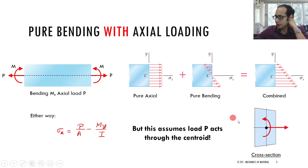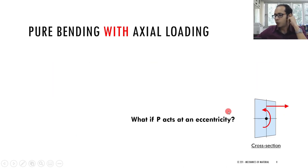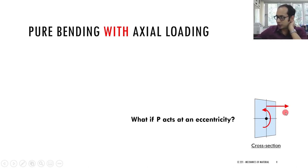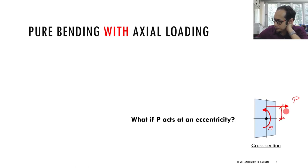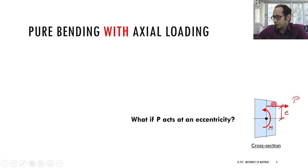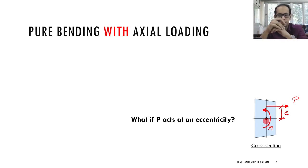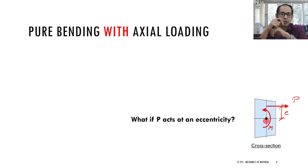That was the case where P acts exactly at the centroid. Now what happens if it acts at an eccentricity? In that case you have the moment M and you have the load P acting at a certain eccentricity e. What you do is shift the point of action of load P from its eccentric position to the centroid — after shifting, you will have a uniform stress distribution — but in addition you must introduce a moment equal to P times e.